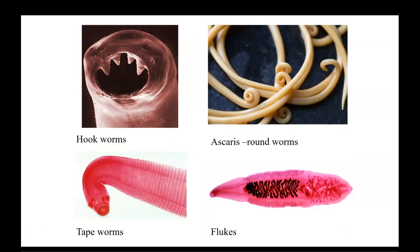Here we're going to see some more protists. All of these are going to be on the side that are referred to as parasites. You've got hookworms, ascaris which are a type of roundworms, and then you're going to have your flatworms like the tapeworm and flukes. All of these are things that can infect humans as well as other animals.